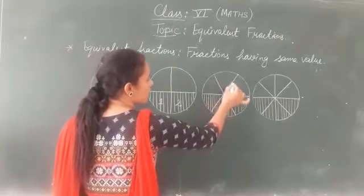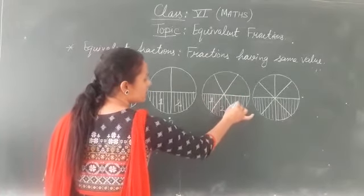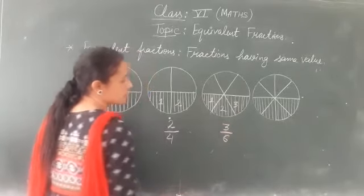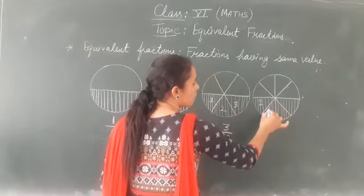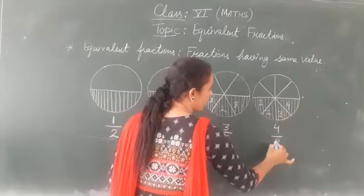Here six parts we have. From the six parts three parts are shaded. So this can be written as 3 upon 6. In the last it is divided into eight equal parts and from that four parts are shaded. So this is 4 by 8.